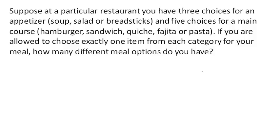Suppose at a restaurant you have three choices of appetizer and five choices for a main course, and you're allowed to choose exactly one from each category. How many different meal options do you have? There are several ways to approach this. One way that I like is called a decision tree.